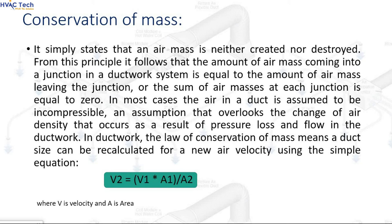Conservation of mass simply states that an air mass is neither created nor destroyed. From this principle, it follows that the amount of air mass coming into a junction in a ductwork system is equal to the amount of air mass leaving the junction, or the sum of air masses at each junction is equal to zero. In most cases the air in a duct is assumed to be incompressible. In ductwork, the law of conservation of mass means a duct size can be recalculated for a new air velocity using the simple equation: V2 = V1 × A1 / A2, where V is velocity and A is area.